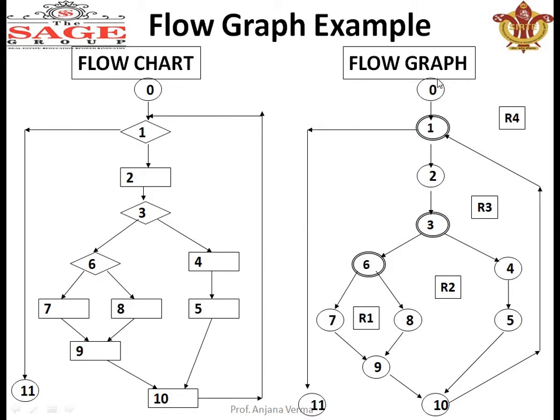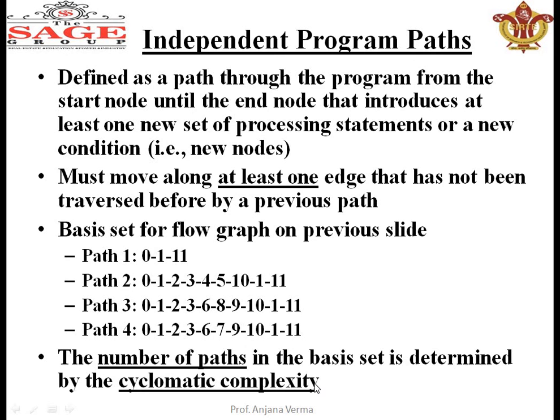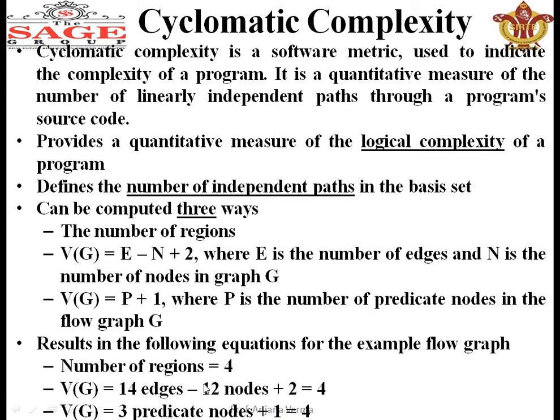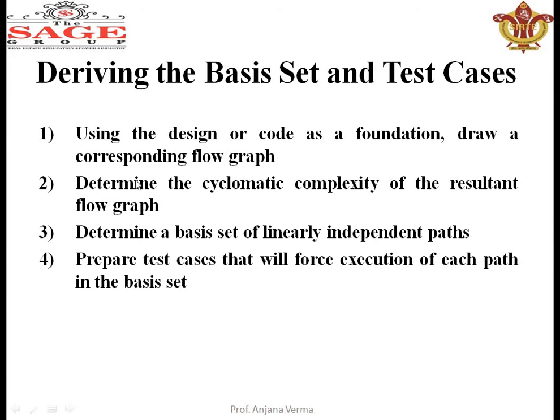Start from 0 to 11, so 12 nodes are there. The edges are 1, 2, 3, 4, 5, 6, 7, 8, 9, 10, 11, 12, 13, and 14 edges. Now we calculate here: 14 edges minus 12 nodes plus 2 equals 4. Predicate nodes are 3 plus 1 equals 4. All are 3, which means we are doing the right thing. Keeping this in mind, when we draw a flow graph, we determine the complexity, then determine the independent paths, and then prepare the test cases that will force execution of each path on the basic set.